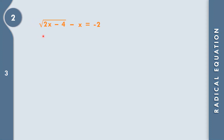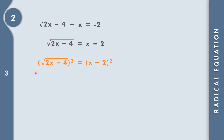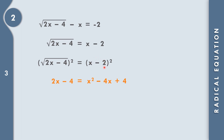In example number 2, we have the square root of 2x minus 4 minus x equals negative 2. First, we move negative x to the right side, giving us the square root of 2x minus 4 equals x minus 2. Squaring both sides cancels the radical, giving 2x minus 4 equals x minus 2 squared. Expanding: x minus 2 times x minus 2 gives x squared minus 4x plus 4.